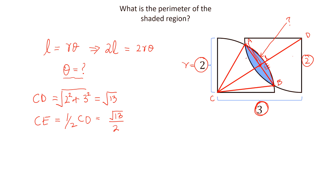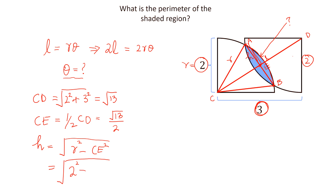Let this length be H. We know that this is R. So H equals the square root of R² minus CE². Putting in the values: H equals the square root of 2² minus (√13 / 2)². Simplifying, H equals the square root of 3 divided by 2.